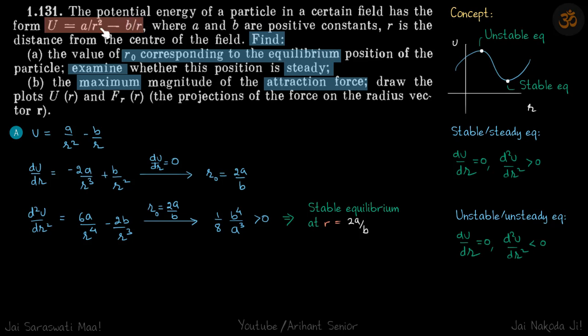The potential energy of this system is of the form A by R squared minus B by R. We need to find R₀ corresponding to the steady equilibrium, examine whether the position is steady, find the maximum magnitude of attraction force, and plot U versus R and force versus R.